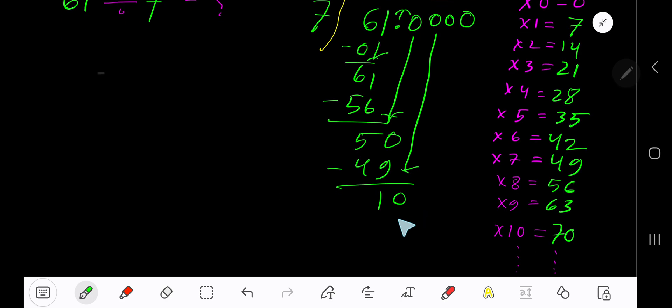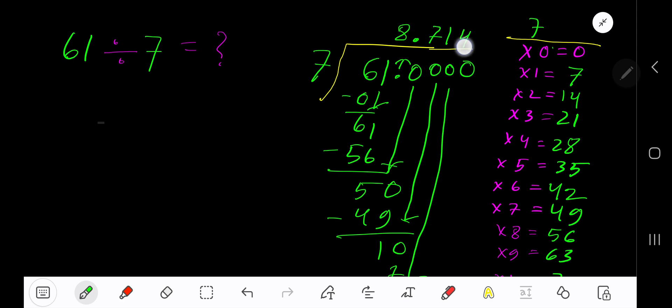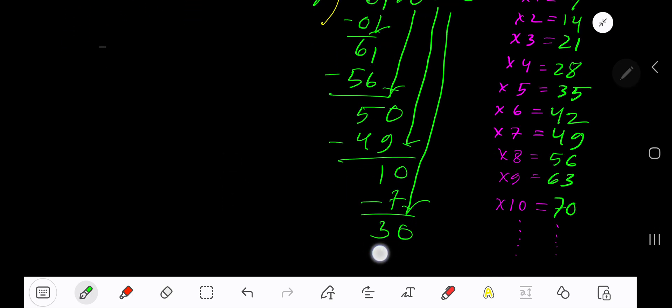Bring down another 0. 7 goes into 30 how many times? 5 times 35, which is greater, so 4 times. 4 times 7 is 28. Subtract to get 2.